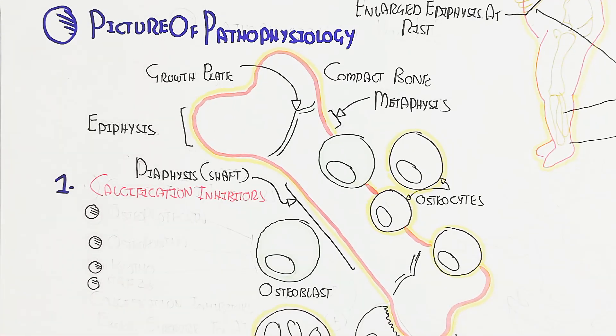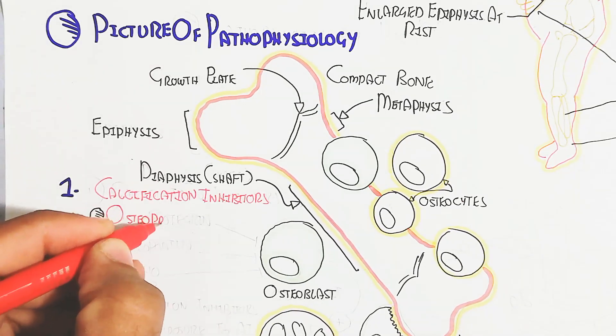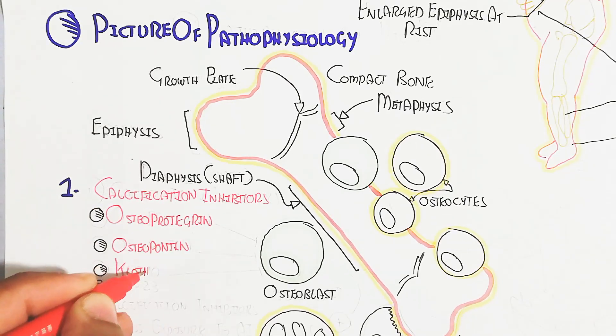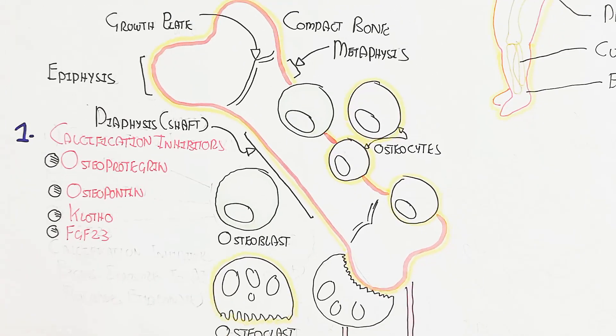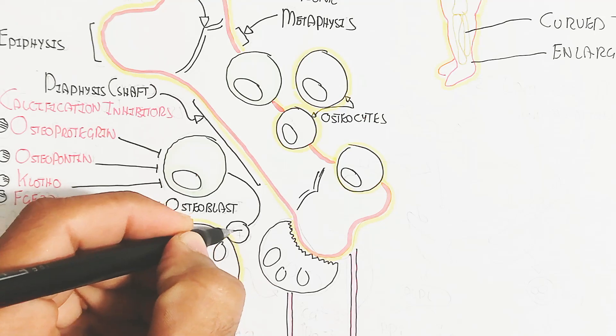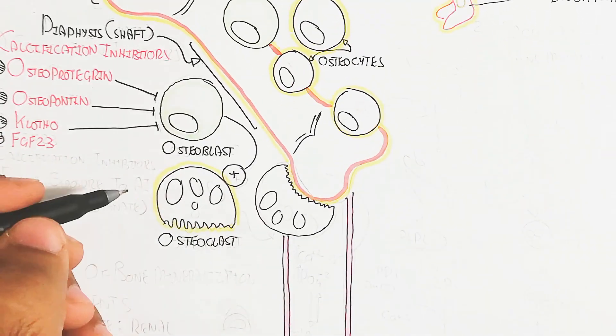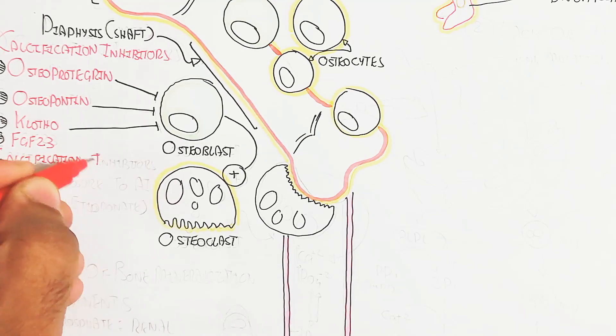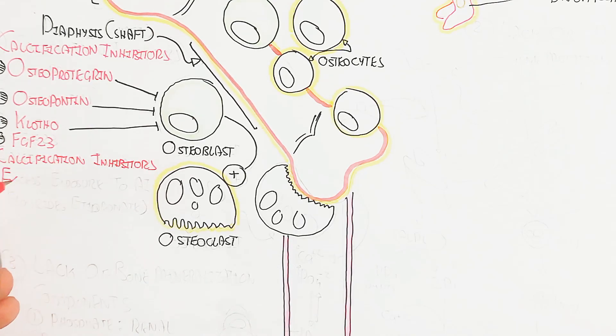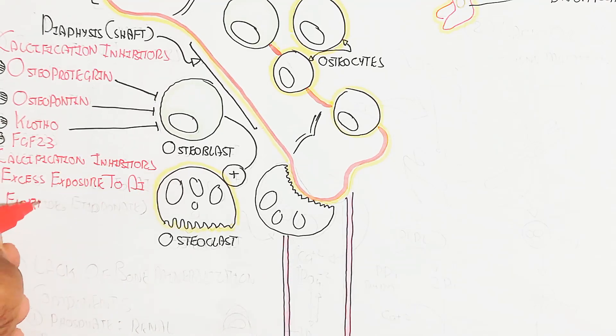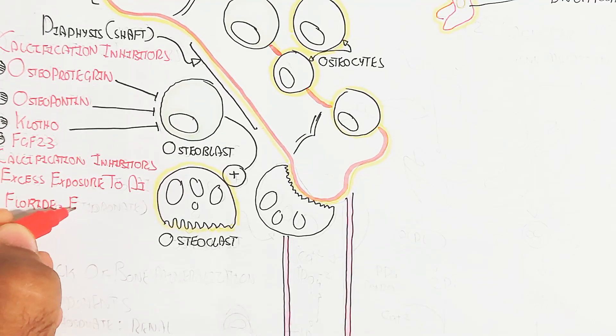Calcification inhibitors are the number one problem. Osteoprotegerin, osteopontin, klotho, FGF23 fibroblast growth factor 23. These all factors will inhibit the osteoblast activity.